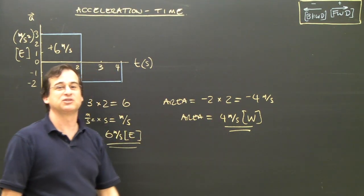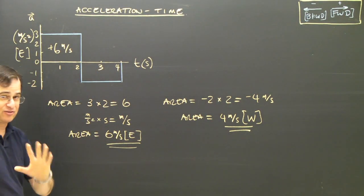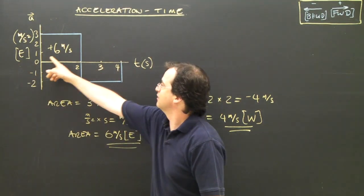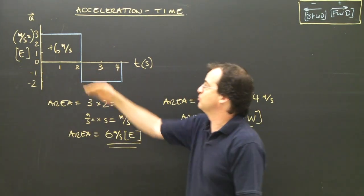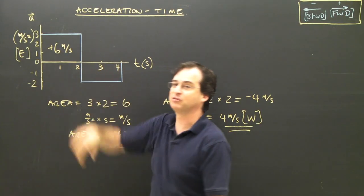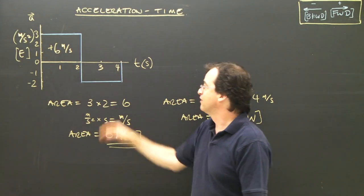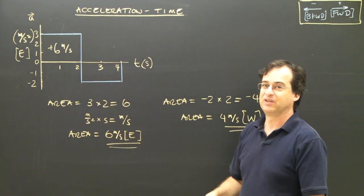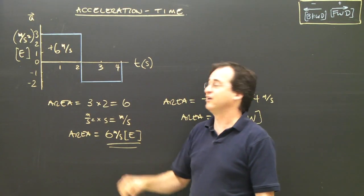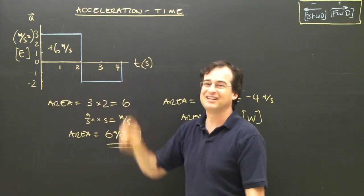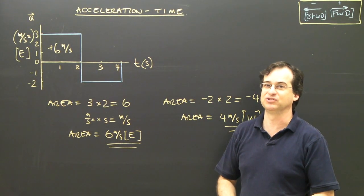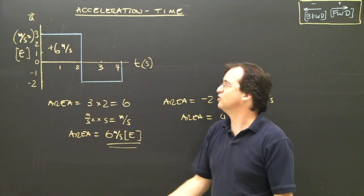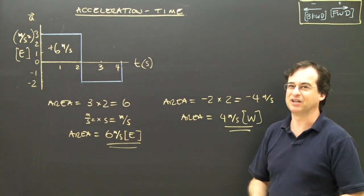Am I going four meters per second at that point? No. Assuming we started at zero — if the object wasn't moving at the beginning — then in the first interval the speed increased to six meters per second. Then the speed decreased by four. So if it started at zero meters per second, it's now traveling at two meters per second towards the east — it slowed down. So I sped up, then slowed down. There's not much else we do with acceleration-time graphs, so that's pretty much it.